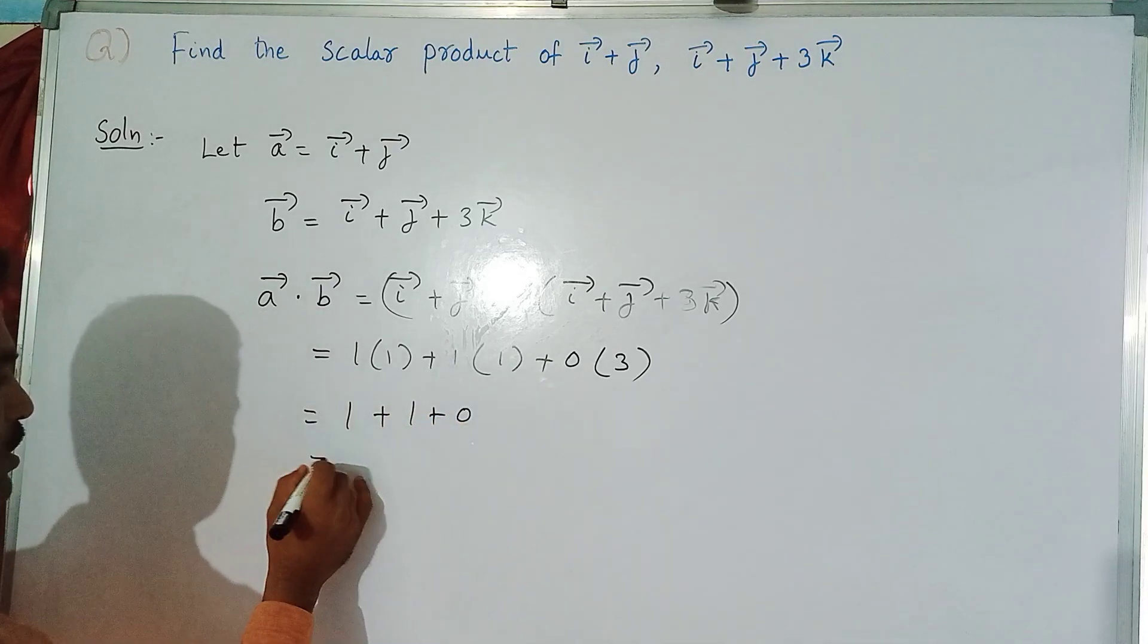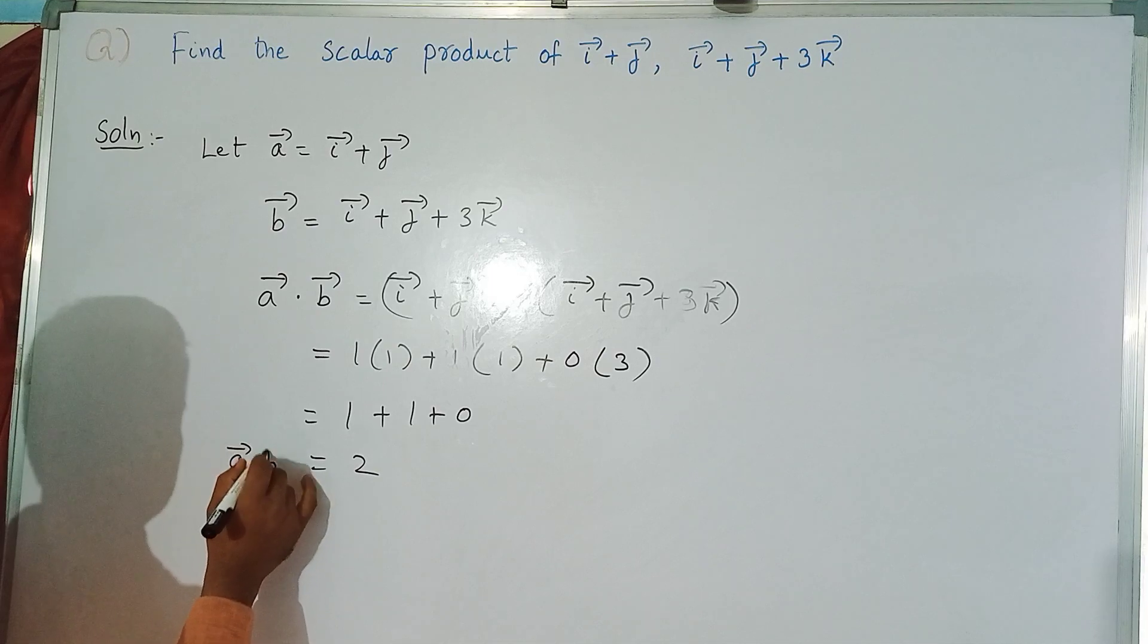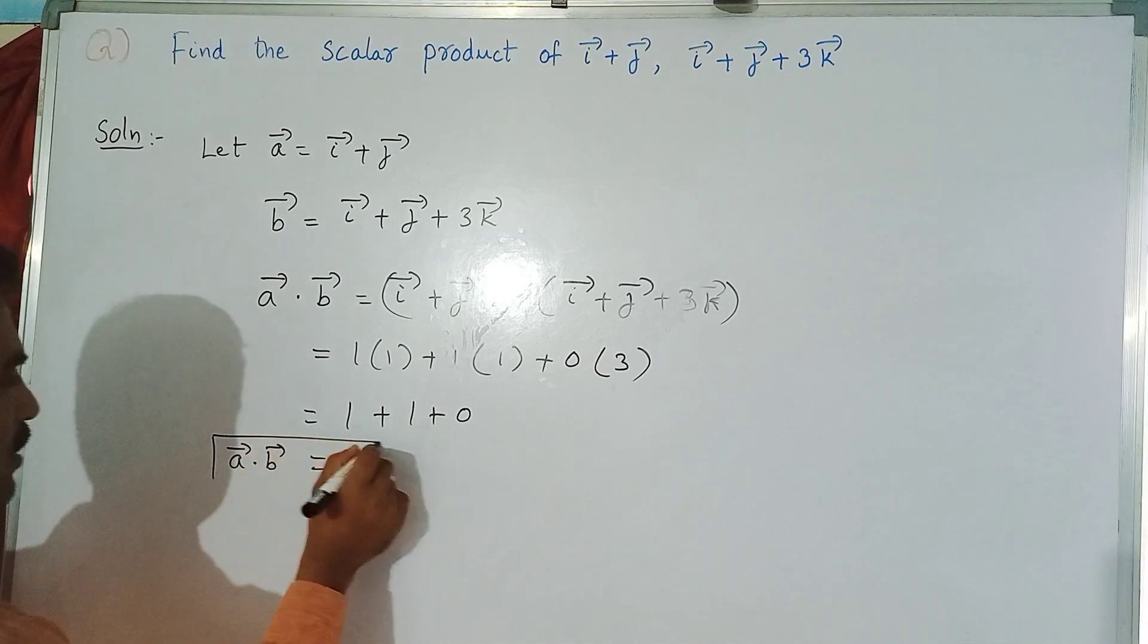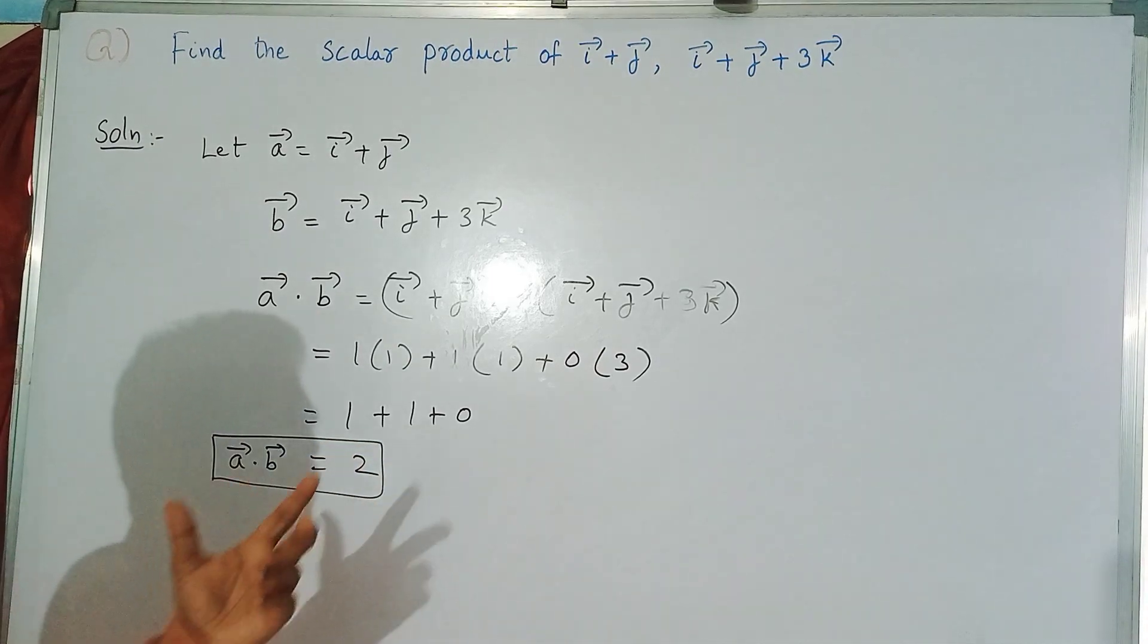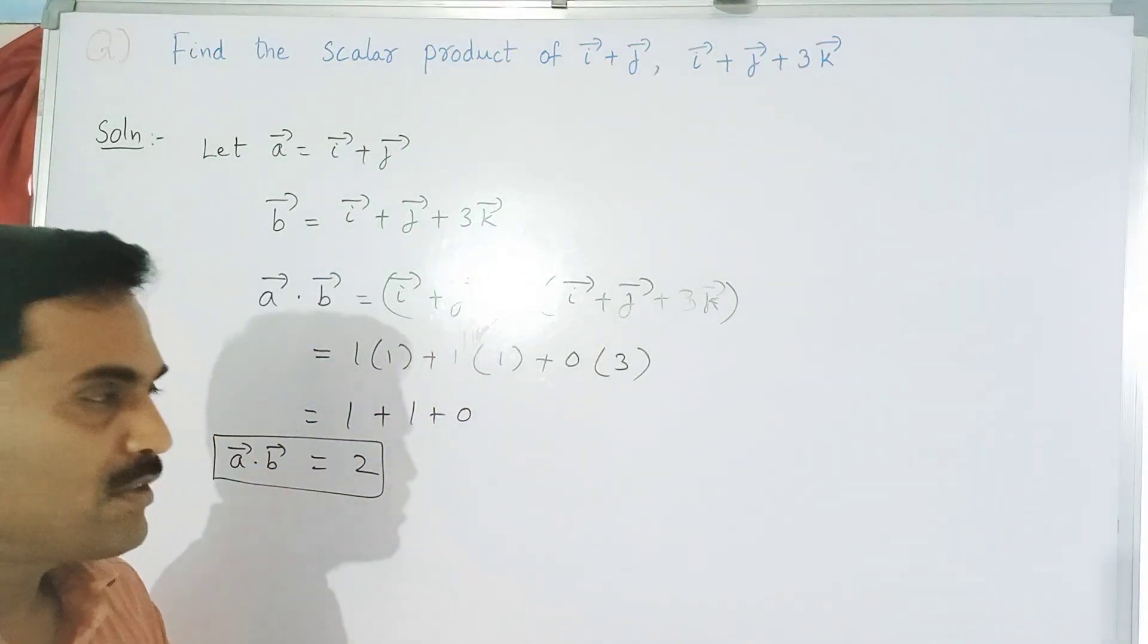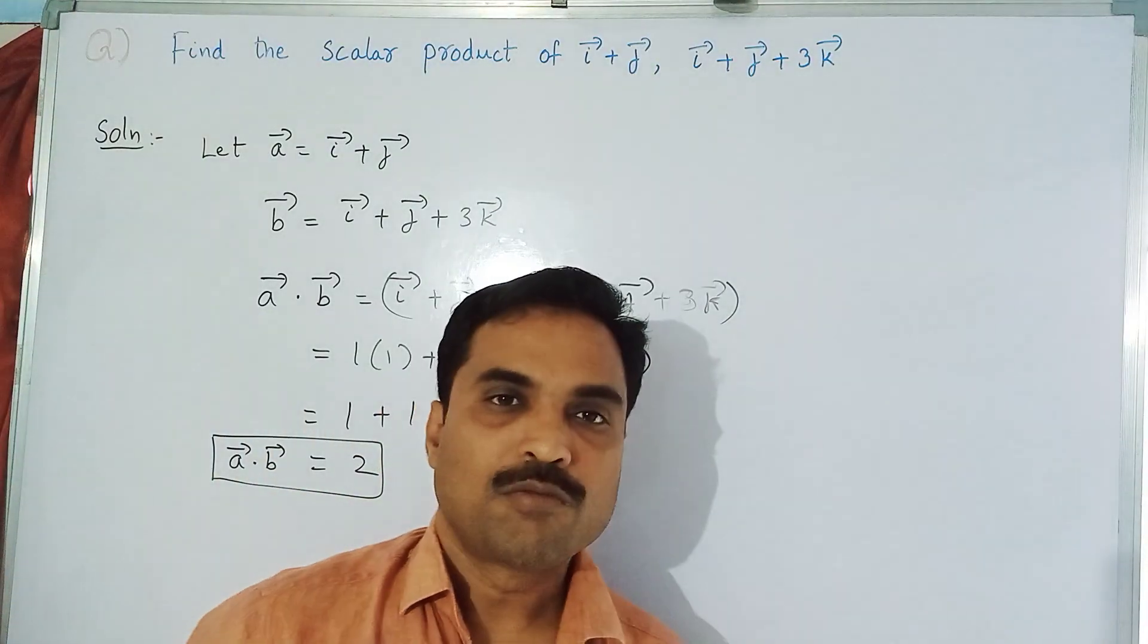So this is a bar dot b bar. This is the solution. Scalar product between the above two vectors is 2.